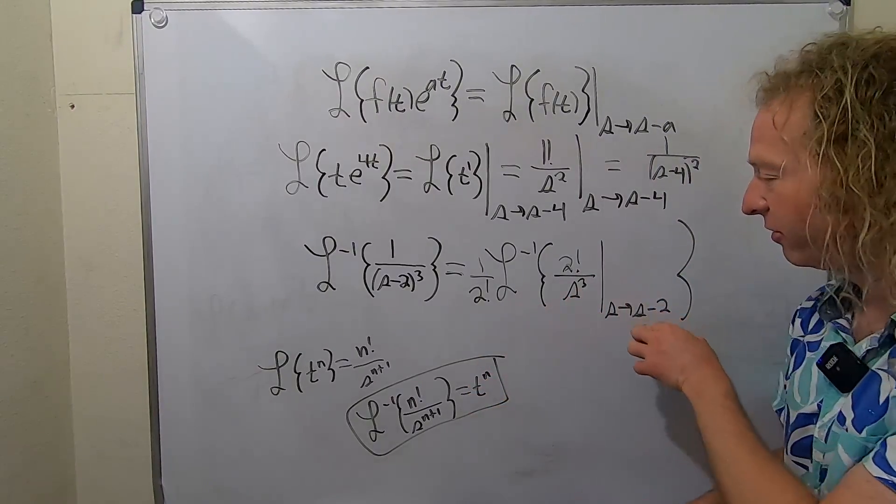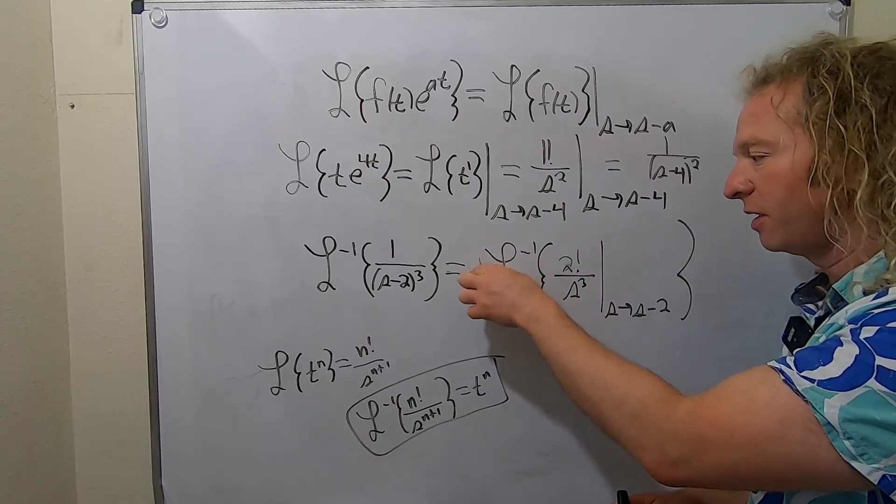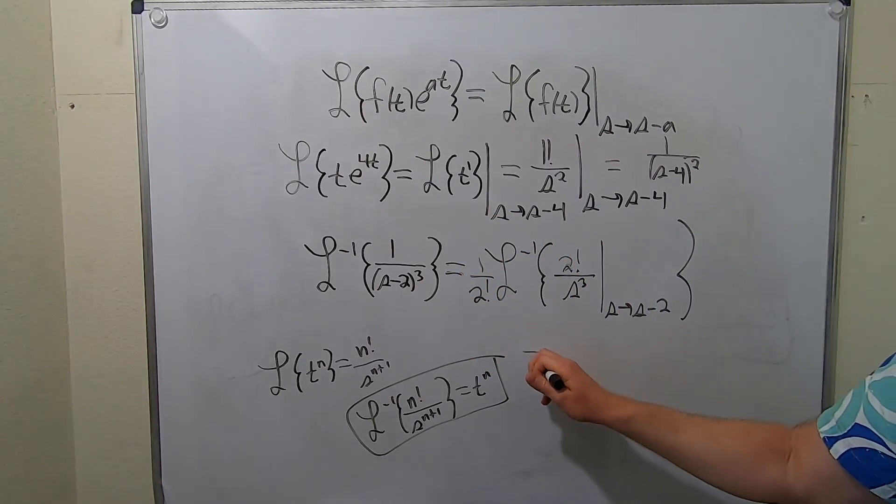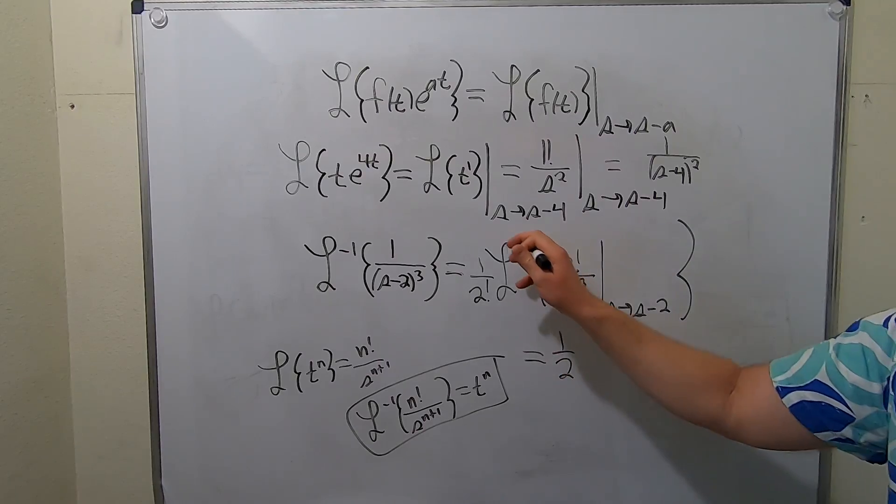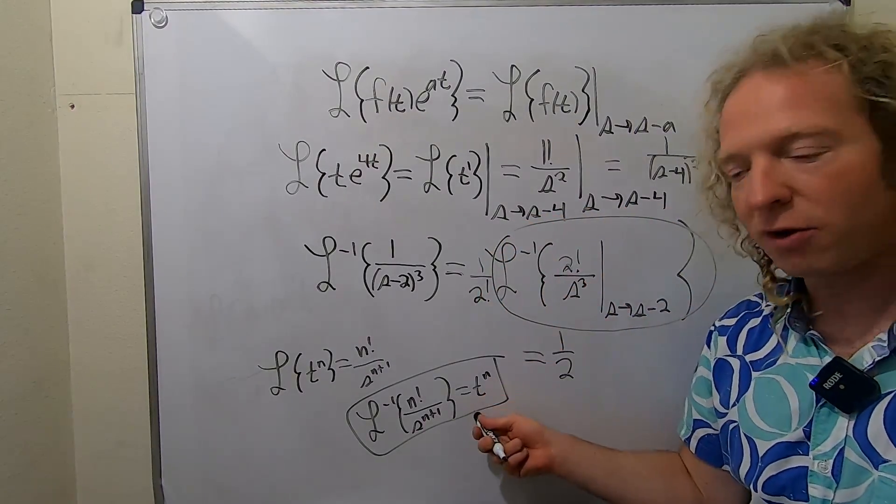So again, you do the shift and then realize that you need one less factorial up here. Then it's 1 over 2 factorial so that they cancel. So now we're in good shape. This is 1 over 2. This whole thing here, what happens is, this is going to give you a t squared from the formula.